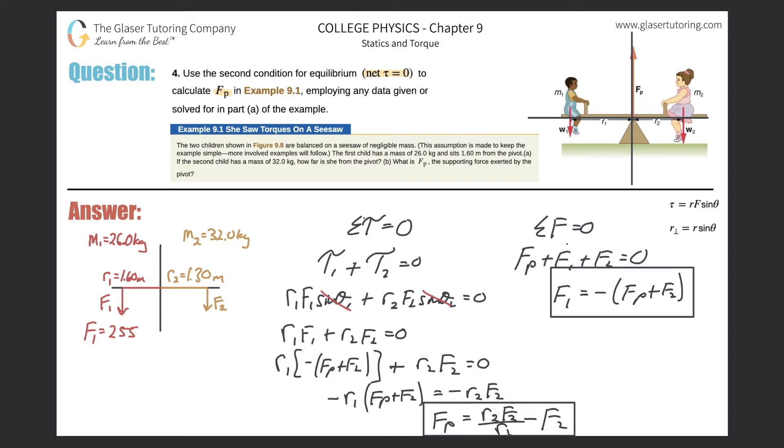And we get a value of about 255. Actually, I'm going to give the complete answer 254.8. And then F sub two here, same thing. The mass of 32 multiplied by 9.8. And 313.6.